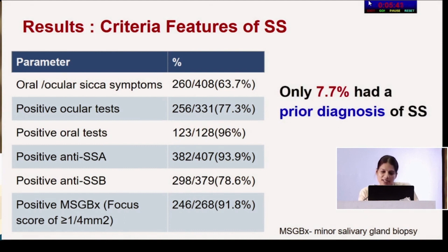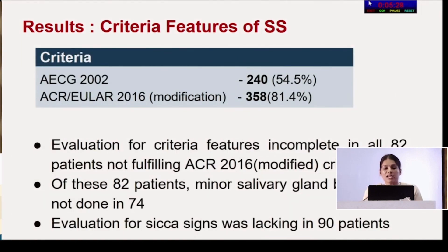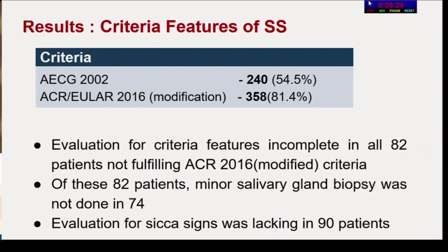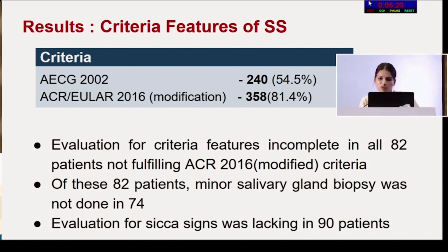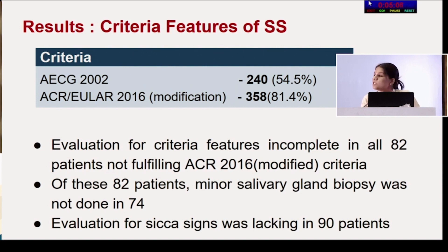Not surprisingly, only 7.7% had a prior diagnosis of Sjogren's, as these patients would not have sought attention for very subtle sicca symptoms. ACR criteria were fulfilled by only 54.5% of patients, and ACR-EULAR with modification by 81.4%. Among those not fulfilling criteria, evaluation was incomplete — minor salivary gland biopsy was not done in 74 patients and evaluation for sicca signs was lacking in 90.